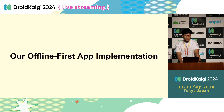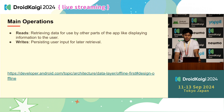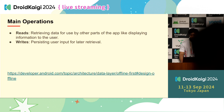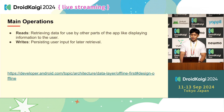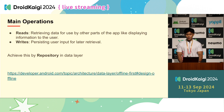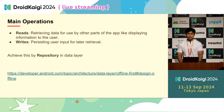Let's move on to the implementation. First, let me explain the main operations: reads and writes strategy in offline mode. By Android definition, reads is retrieving data for use by other parts of the app, like displaying information to the user. Writes is persisting user input for later retrieval. We can achieve this by having repositories in the data layer. The repository is responsible for combining data sources, and at least one data source should not need network access. At a minimum, an offline-first app should be able to perform reads without network access.